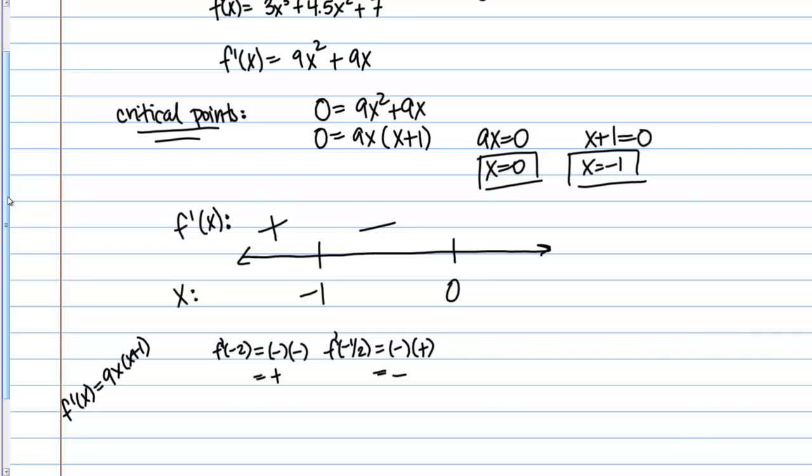Then I just have one more interval to check, greater than 0. Let's try f'(1). Let's see if that's positive or negative. 9x, that's going to give me positive, and x + 1 is going to give me positive. This is a positive overall. So far, our steps have been exactly identical to the steps we used to determine if a function was increasing or decreasing. If that was what you were asked at this point, you could just read off your chart. Where the derivative is positive, the original function is increasing. And where the derivative is negative, the original function is decreasing. So we have a function that's increasing, and then at -1, it changes to decreasing. And then at 0, it changes to increasing again.